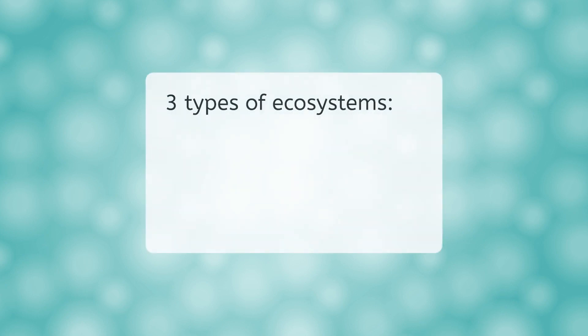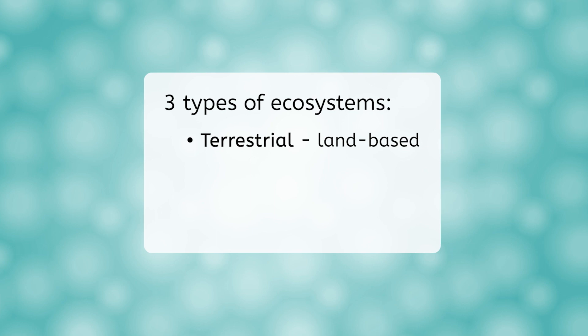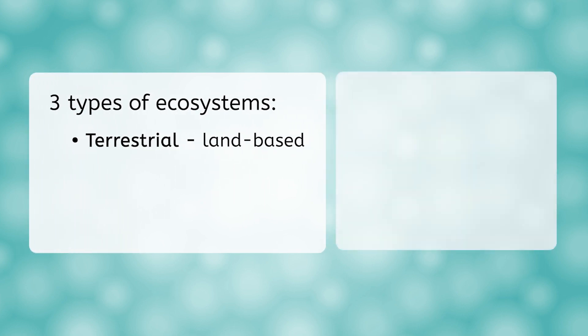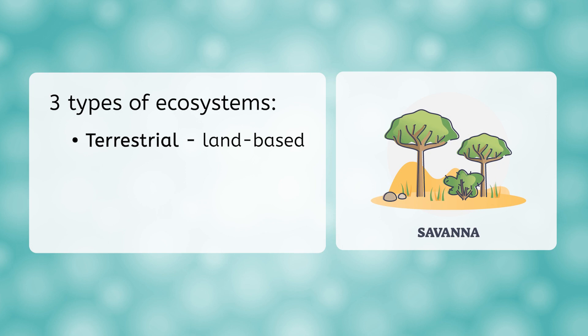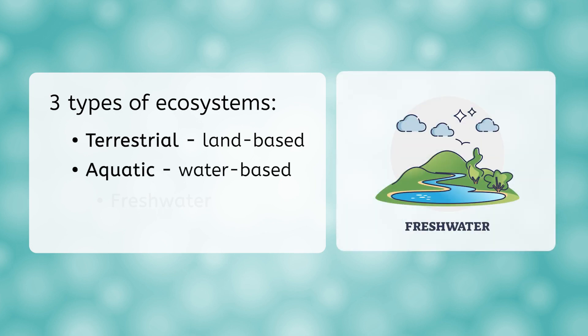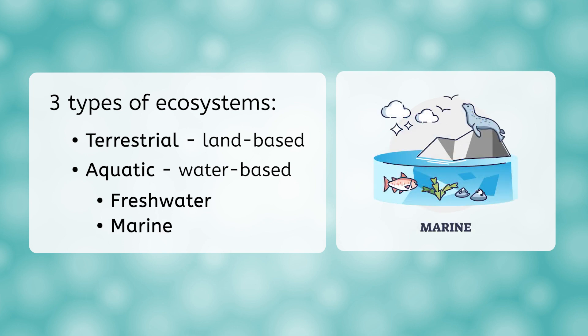There are three main types of ecosystems, known as biomes, that we will explore further in the next lesson. Terrestrial ecosystems are land-based and include biomes such as rainforests, savannas, deserts, and tundras. Aquatic ecosystems are divided into freshwater biomes, such as lakes, rivers, and swamps, while marine biomes include coral reefs, the open ocean, and the deep ocean.